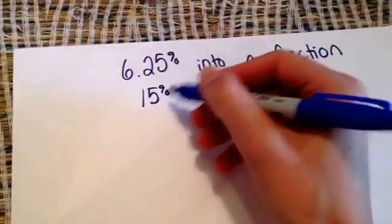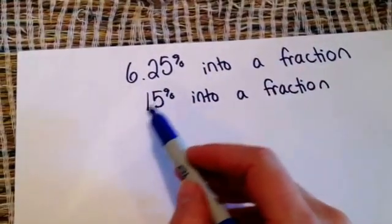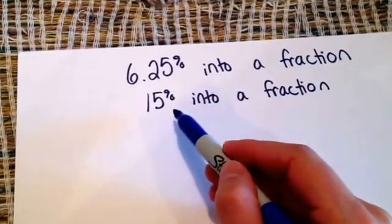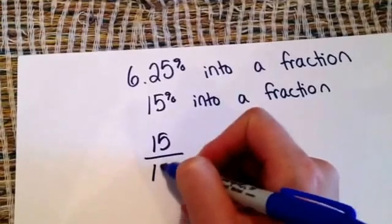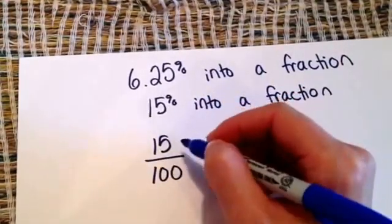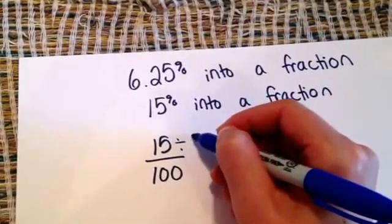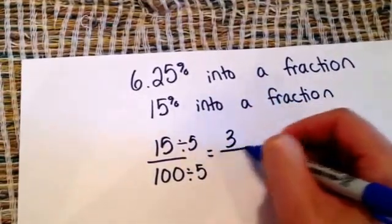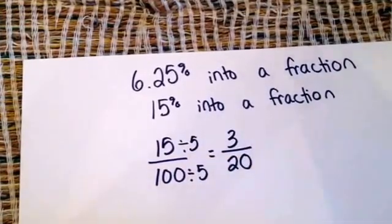Anytime we have a percent, we're literally saying it's per 100. So basically what we're saying is 15 over 100 and then we can reduce that. I can divide both of these by 5 and I would get 3 twentieths.